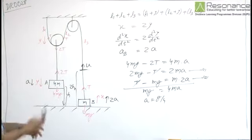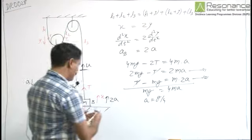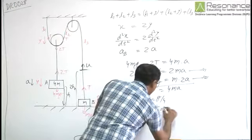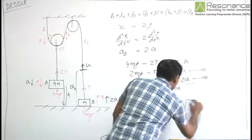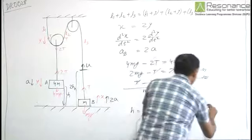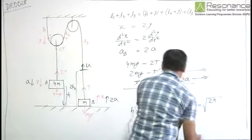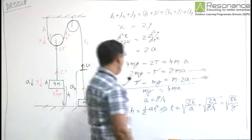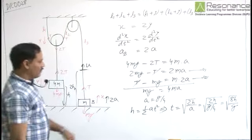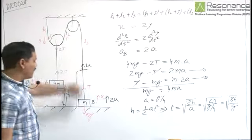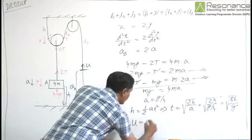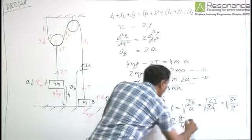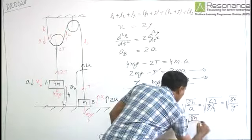We need to first find the time of fall of A by distance h. Here from we can write h is equal to half at square, or t is equal to under root 2h by a, that is equal to under root 2h by g by 4, that is under root 8h by g. Within that time, the speed attained by block B is u is equal to acceleration into time, that is twice of g by 4 into root 8h by g.